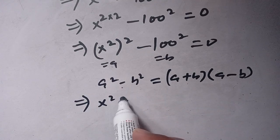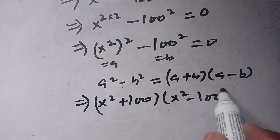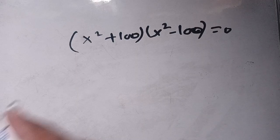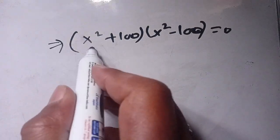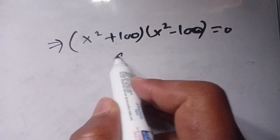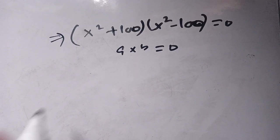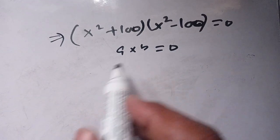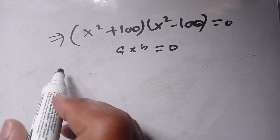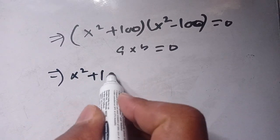We apply the identity a squared minus b squared equals (a plus b)(a minus b). This gives us (x squared plus 100) times (x squared minus 100) is equal to 0. There are two factors: the first term is x squared plus 100 and the second term is x squared minus 100.